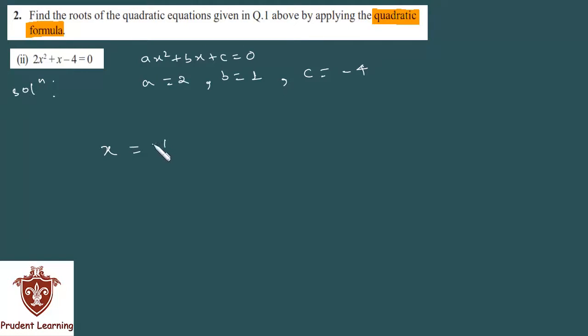x is equal to minus b plus minus under root of b square minus 4ac over 2a. Now we put the values: minus of b, which is 1, plus minus under root of b square, which is 1 squared, minus 4 into a, which is 2, and c, which is minus 4,